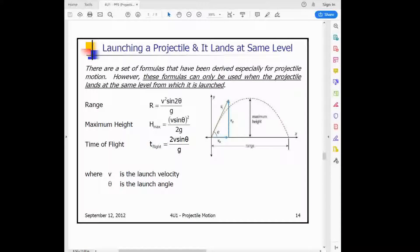There are three formulas for projectile motion when an object is launched and lands at the same level from which it was launched. These are on your formula sheet. Range is v squared sine 2 theta over g. The maximum height is v sine theta squared divided by 2g. The time of flight is 2v sine theta over g.